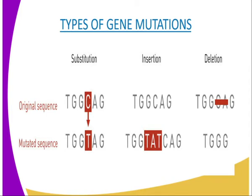Insertion is the addition of an extra base onto an existing DNA strand. As you can see from our diagrammatic representation, the original gene did not have the TAT genes, but after mutation the TAT genes were inserted. For instance, if the base guanine is inserted between the first two adenines at the beginning of the DNA chain, the resulting mRNA triplet and the subsequent amino acid alignment will be altered. Our original sequence was TGCAG, but after mutation it became TGG, then TAT was inserted, followed by CAG.